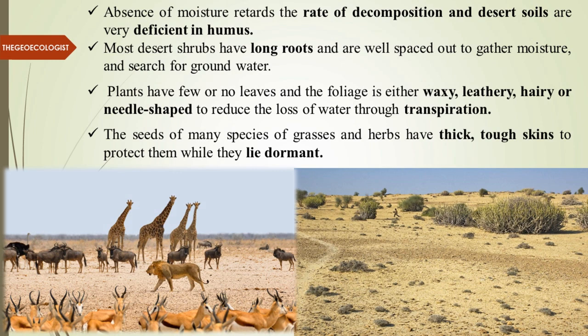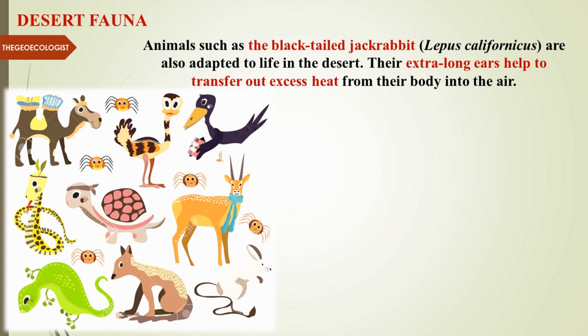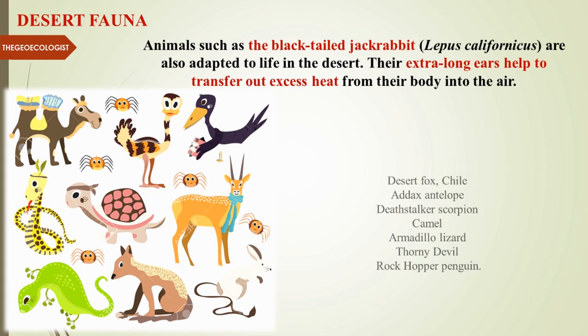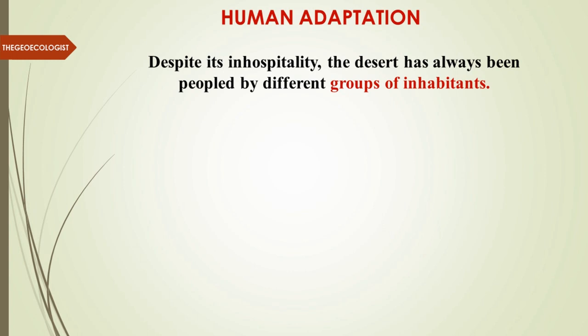Desert animals are also adapted to desertic life. For example, the black-tailed jackrabbit has extra-long ears to transfer excess heat from its body. Other examples include the desert fox, oryx antelope, deathstalker scorpion, camel, armadillo lizard, thorny devil, and rock hopper penguin. Many of these species are in endangered categories because of climate change.